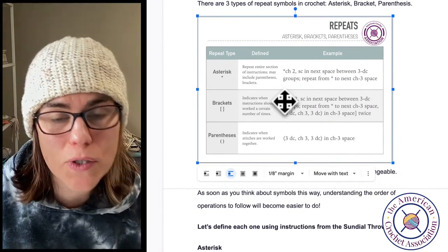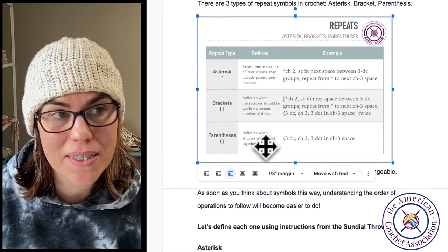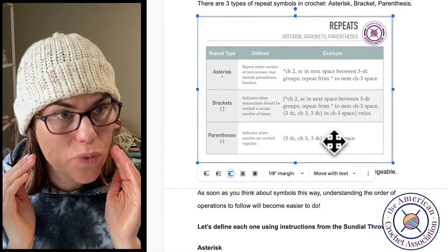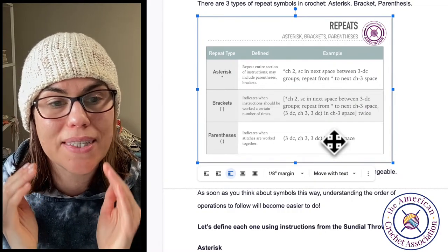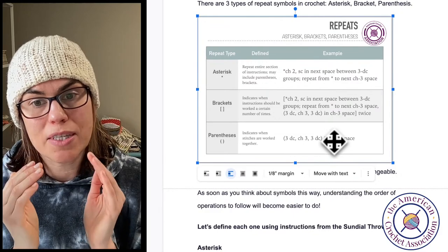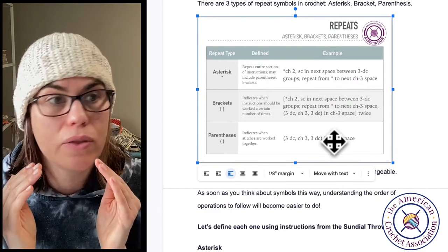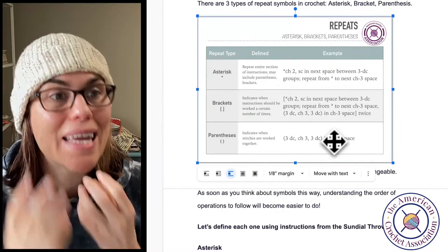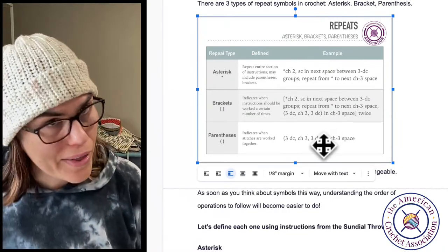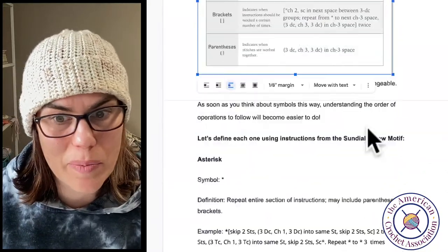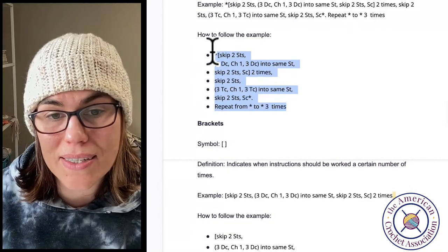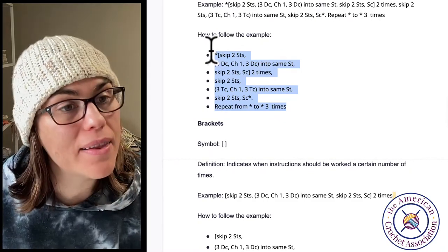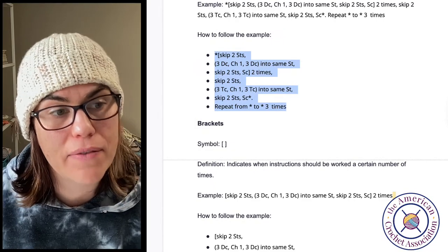Parentheses is sometimes confused with bracket, but parentheses has a very specific role in crochet patterns. Whenever you see parentheses, in terms of stitch repetition, it only indicates when stitches are worked together, either into one stitch or one space. And that's why we see things like parentheses, three double crochet, chain three, three double crochet into one chain three space into next double crochet. It's telling you to work all of that stuff into one stitch or one space.